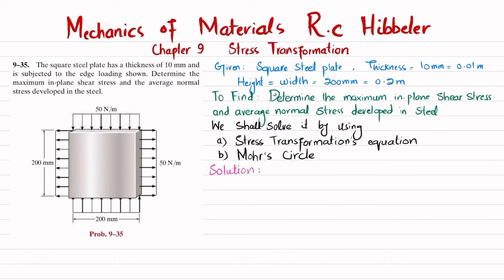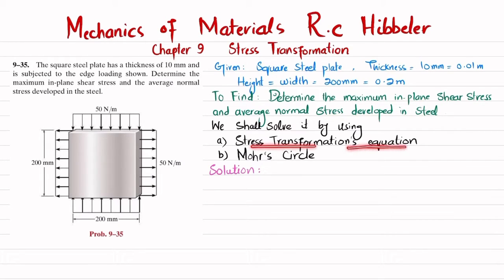We have to determine the maximum in-plane shear stress and average normal stress developed in the steel. We will solve it using the stress transformation equation, and then solve the same using Mohr's circle — both will give you the same answer. So let's start with the solution.